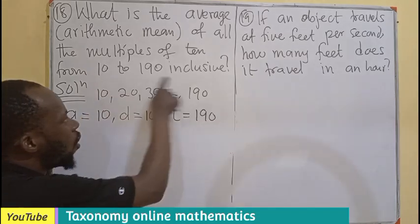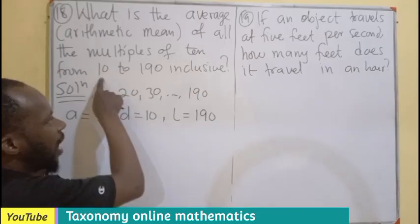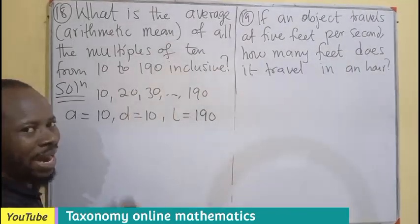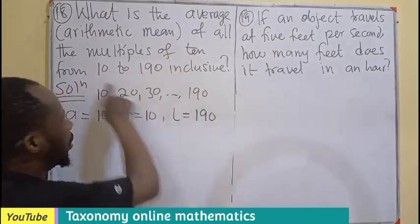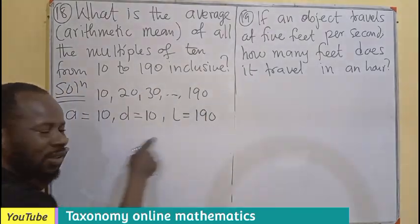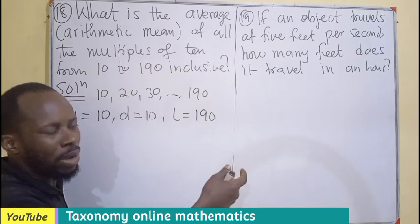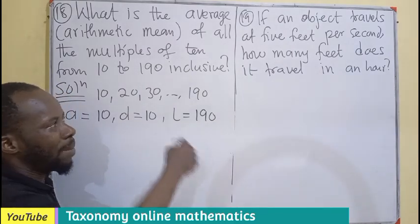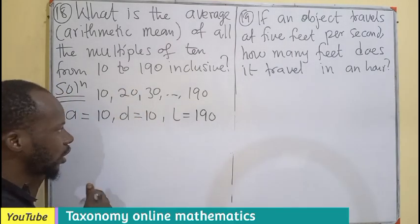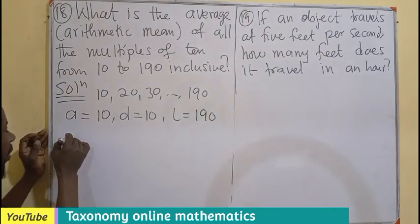The question says find the mean, meaning add all the numbers. If you are adding them, you are going to divide by the number of numbers you are adding. We don't know. You can decide to list all of them. That would be a tedious way to do. So we want to find the number of numbers in this range using the sequence.